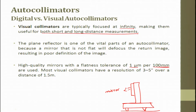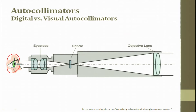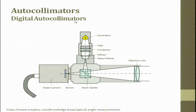Most visual autocollimeters have a resolution of 3 to 5 minutes over a distance of 1.5 meters. There is an objective lens, an eyepiece, and reticles. For the digital form, the operator's eye is replaced by a photodiode. In the digital autocollimator, there is an objective lens, then a beam splitter, which goes to an objective with reticles, then a diffuser, condenser, and filters.